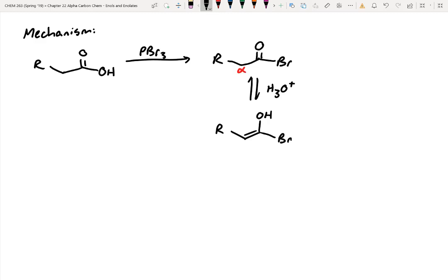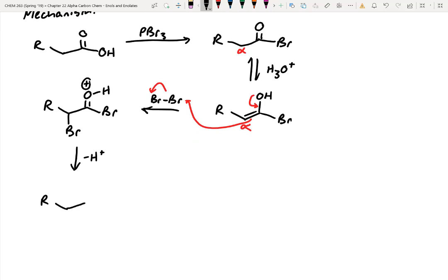And then in the next step, you can react this with more bromine. Just like we saw before, this alpha position is pretty nucleophilic in the enol state. So you can take these electrons down and the pi bond can attack one of these bromines, kick off another bromine, and you get your alpha halogenation.